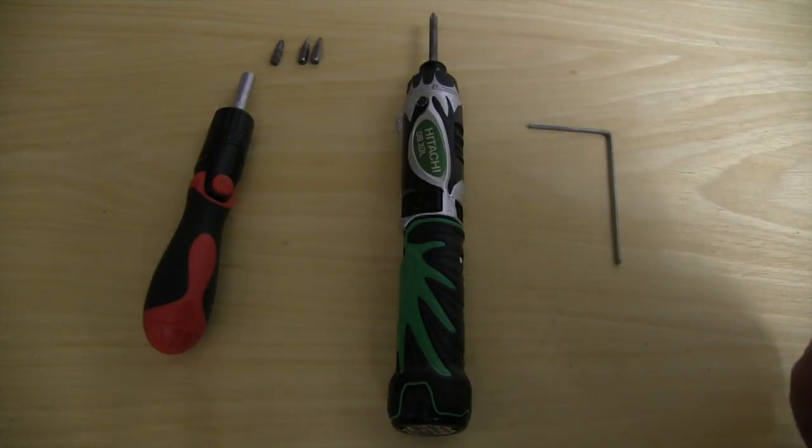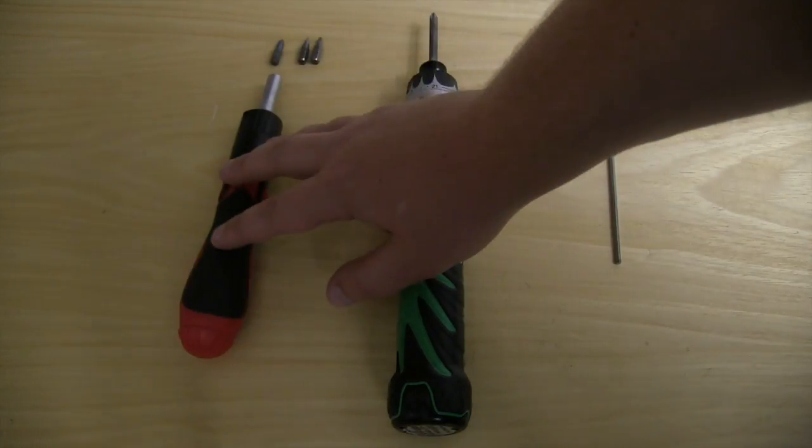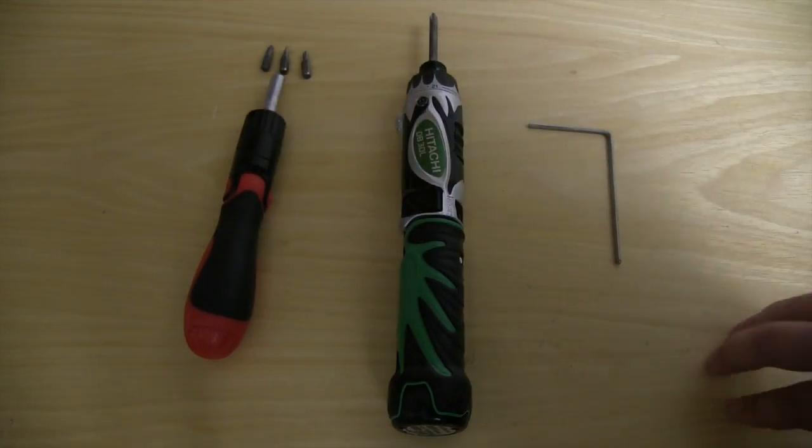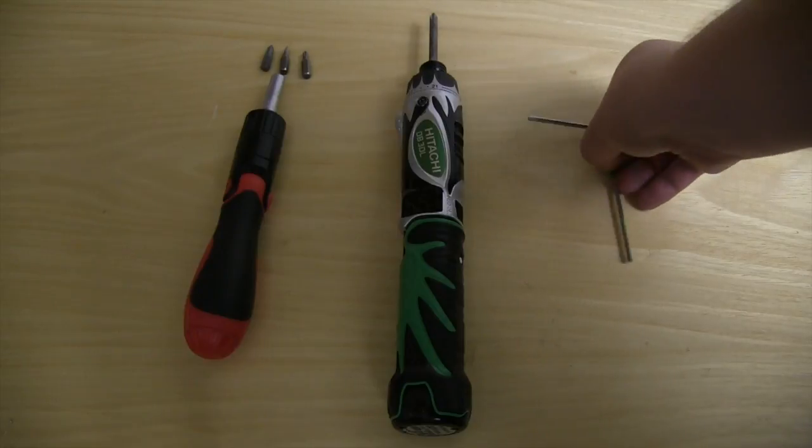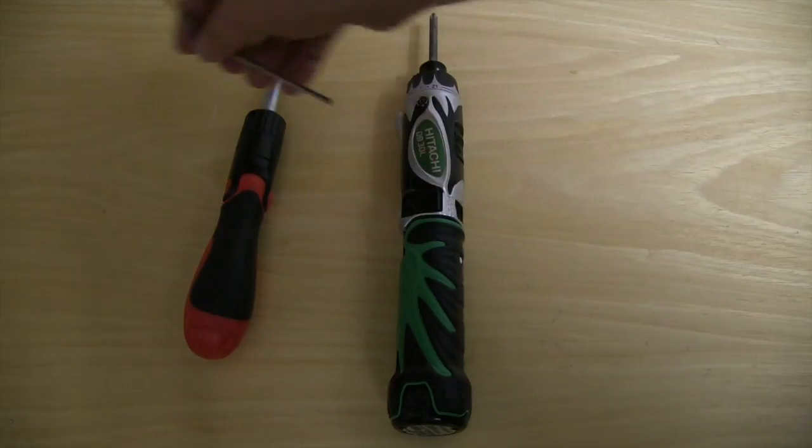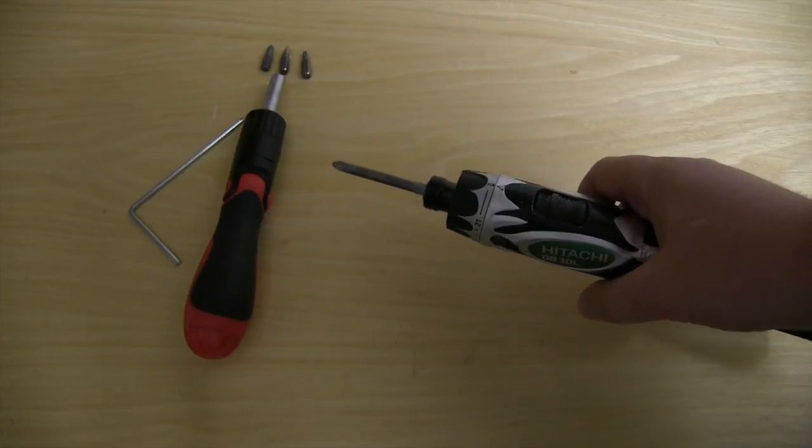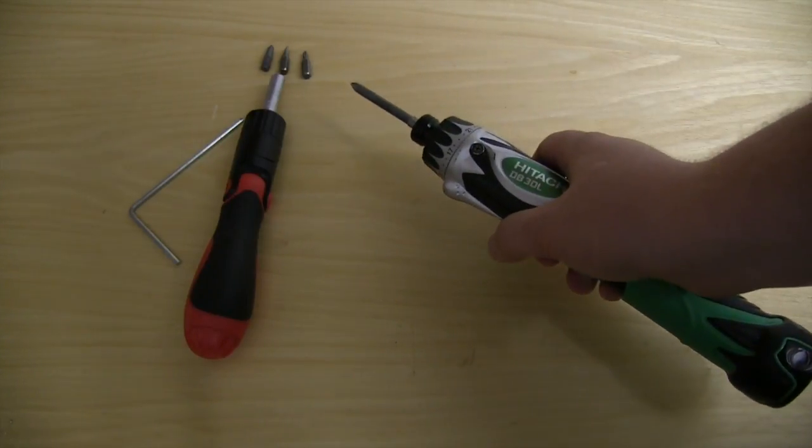Let's start with the basic tools you're going to need. A ratcheting screwdriver with multiple bits: Phillips, flathead, and torque. You're also going to need an Allen wrench, and optionally an electric screwdriver for a couple of the simpler screws.